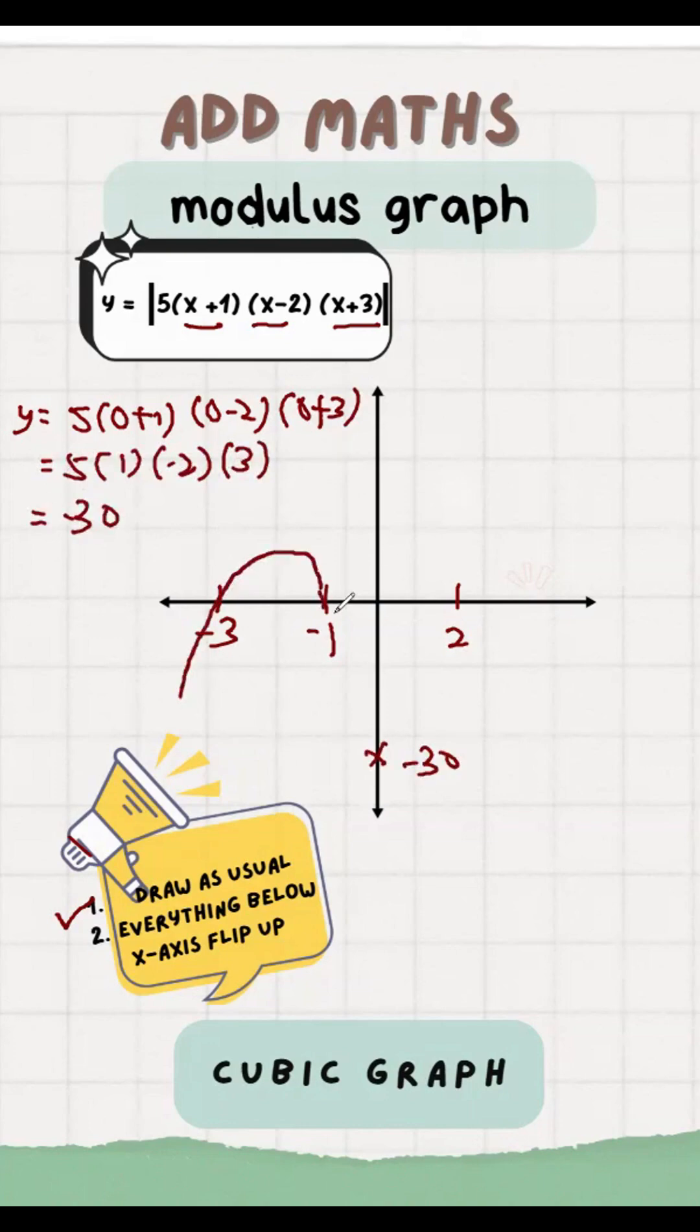Then we sketch it. After sketch as usual, everything below x-axis will flip. Flip, flip, flip. Minus 30 becomes 30. So this is the modulus graph for cubic.